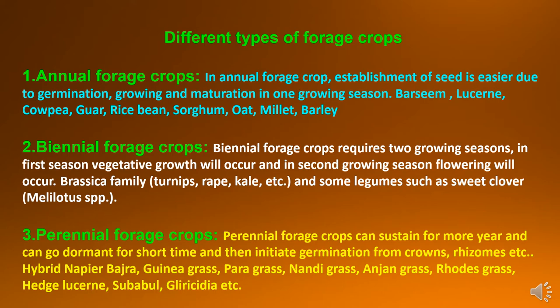Third is perennial forage crops. Perennial forage crops can sustain for more years and can go dormant for a short time and then initiate germination from crowns or rhizomes etc. Hybrid napier bajra, guinea grass, paragrass, nandi grass, anjan grass, rhodes grass, hedge lucerne, subabool and glyricidia are falling under perennial forage crops.